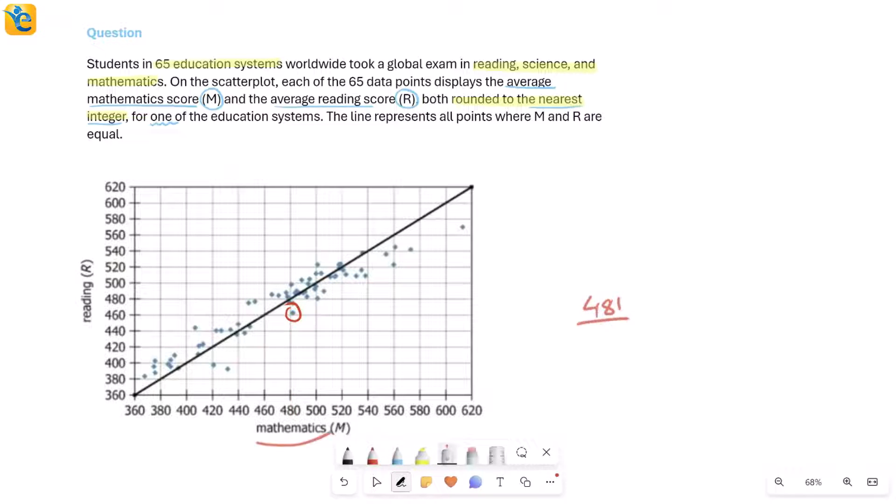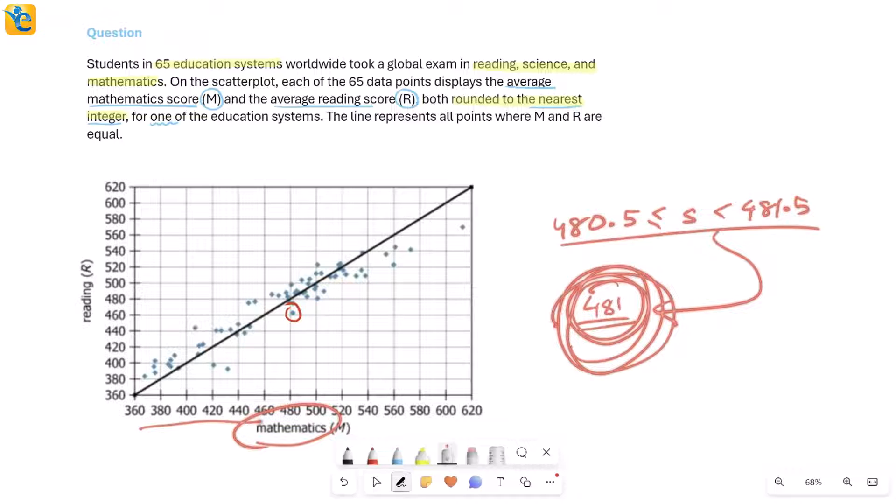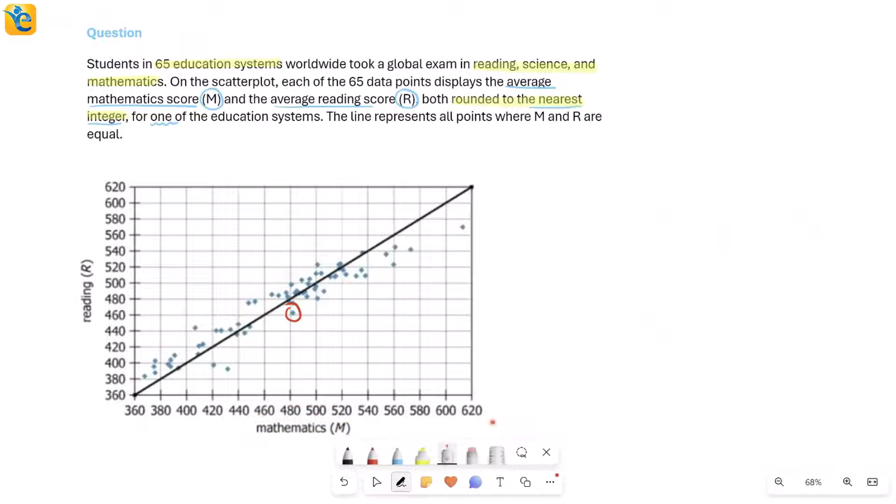What that means is if suppose this value is 481, that's not the actual average mathematics score. But what it really means is that the actual score is in the range 480.5 and less than 481.5. That's how when you rounded to the nearest integer, it becomes 481. So all of these values here should not make you think that the score itself was an integer every time. The average score, when you rounded it off to the nearest integer, then it became an integer and then it is represented here on the scatter plot.